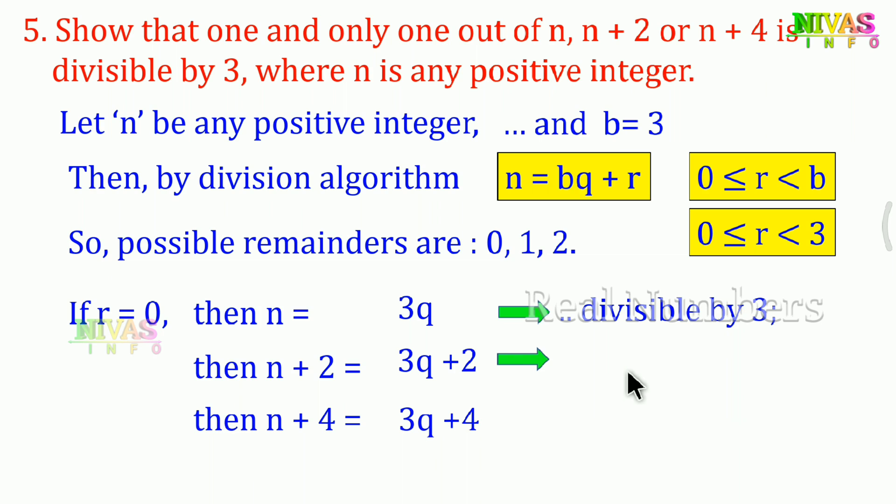Since 3q+4 = 3q + 3 + 1, only the 3q and 3 parts are divisible by 3, leaving remainder 1. So n+4 is not divisible by 3. Therefore, when remainder is 0, only n is divisible by 3.